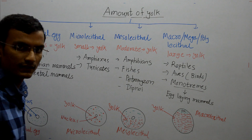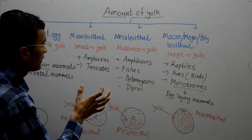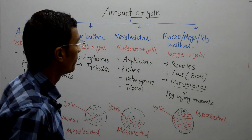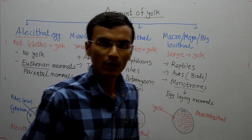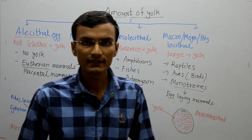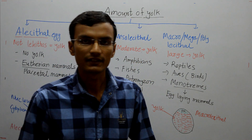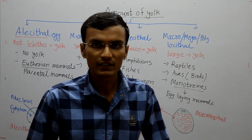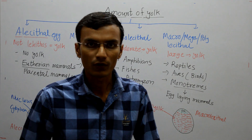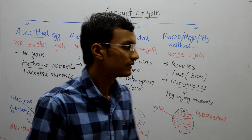This is the classification of eggs based on the amount of yolk. Now let's see the next classification, which is based on the distribution of yolk present in the egg.